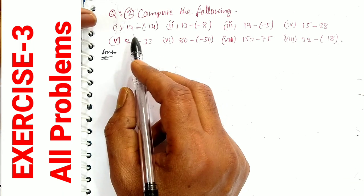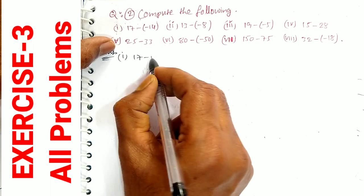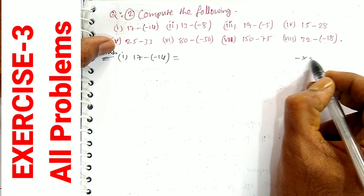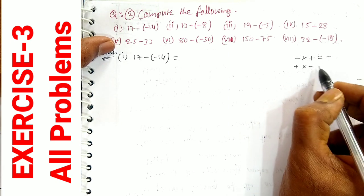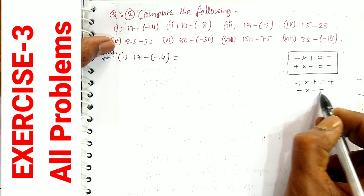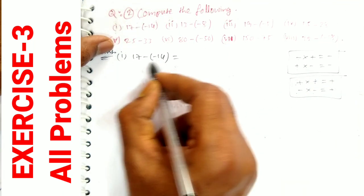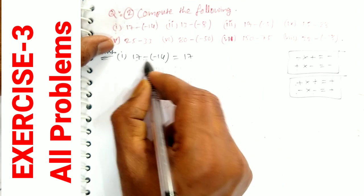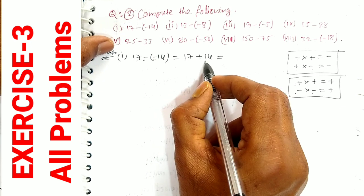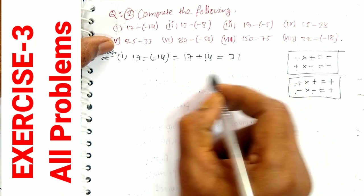Question number 2: Compute the following. This is done directly without the number line. First question: 17 minus (-14). Using sign rules — minus into minus equals plus — this becomes 17 plus 14. Adding: 10 plus 10 is 20, 7 plus 4 is 11, so 20 plus 11 equals 31 is the answer.